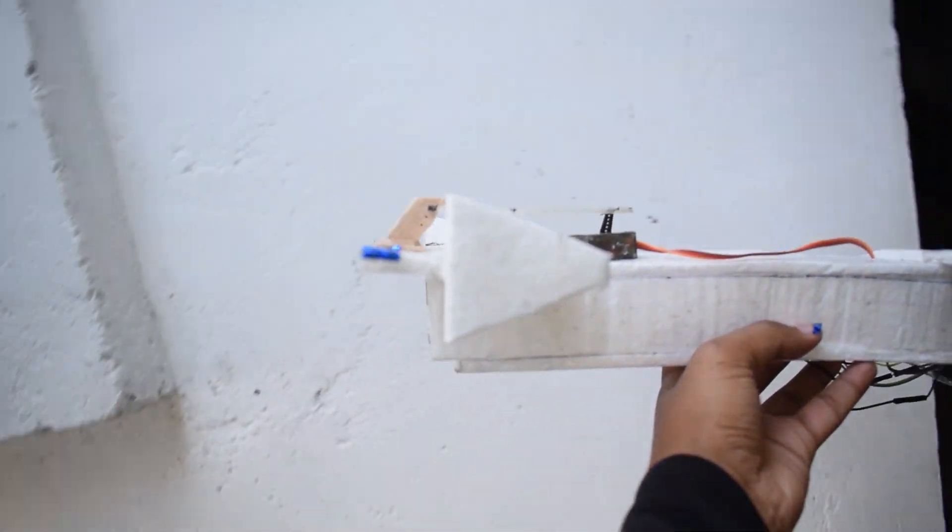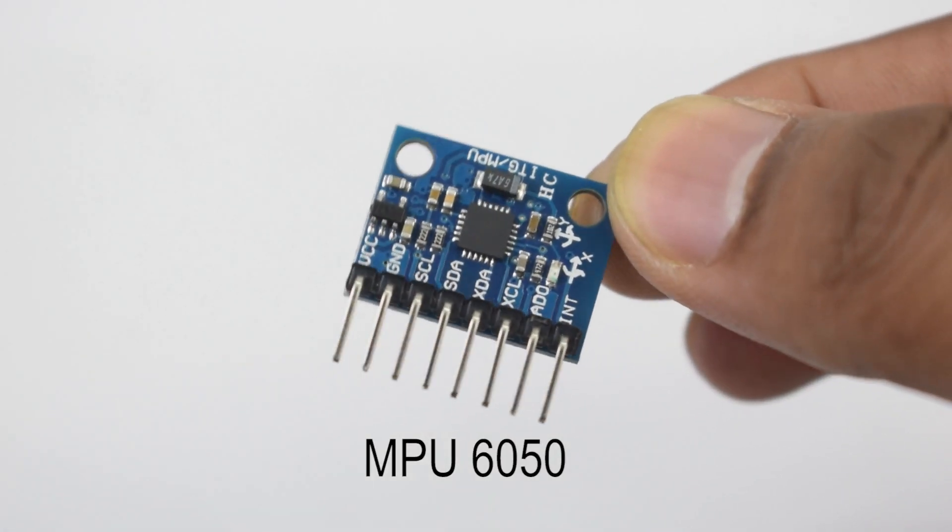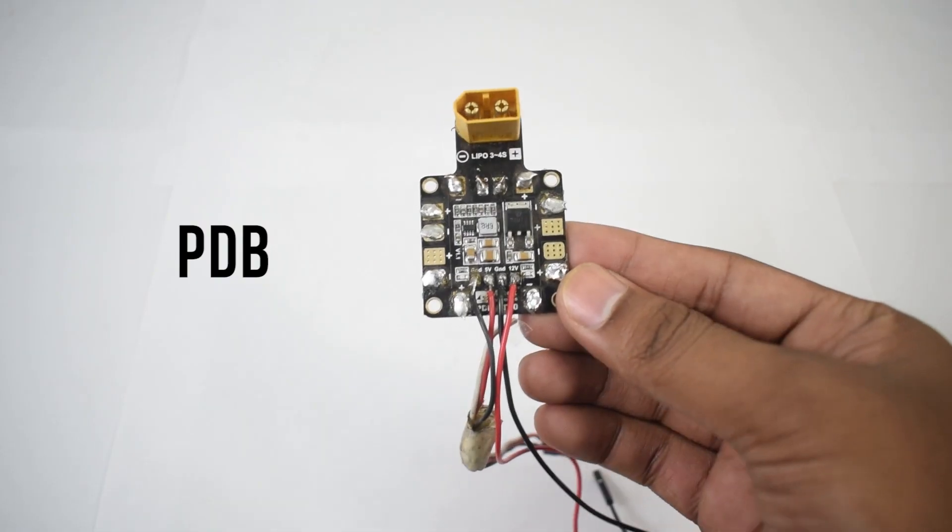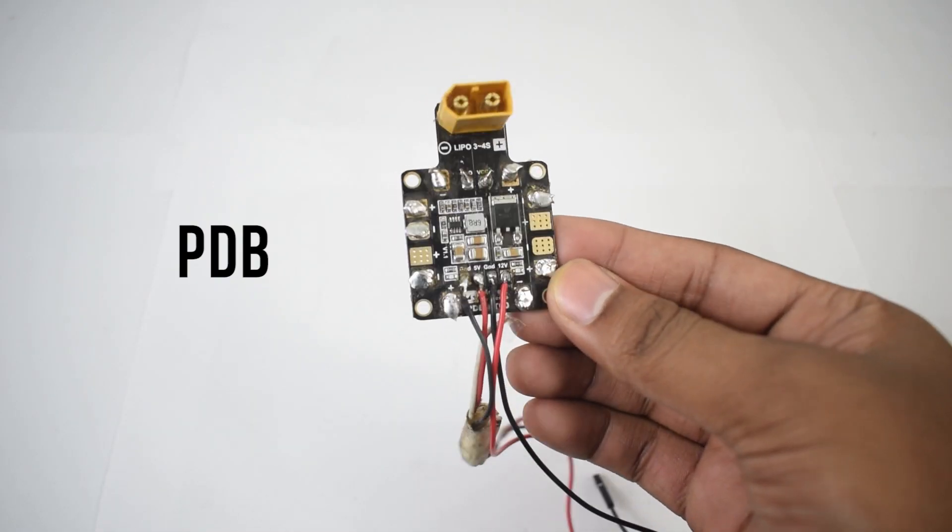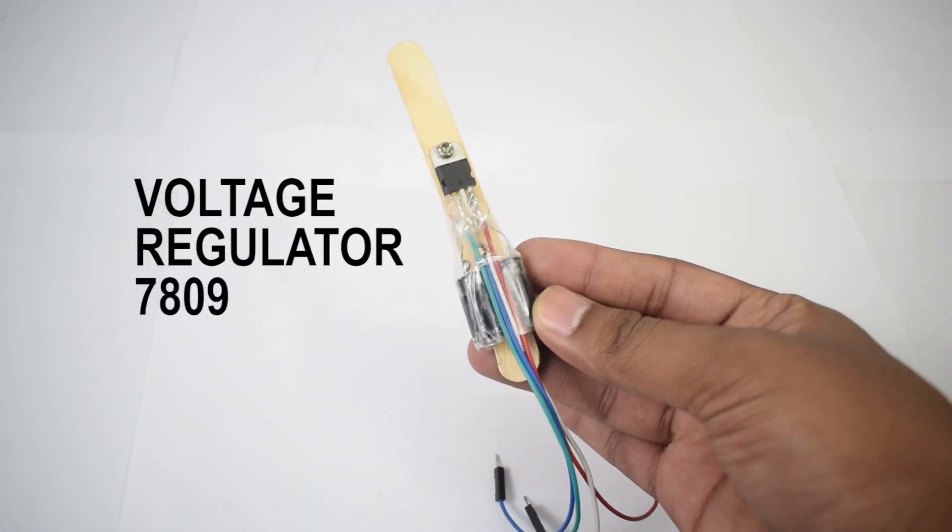For this, you will need Arduino Uno, MPU 6050 gyro and accelerometer sensor, power distribution board, receiver, and 9 volt voltage regulator IC.